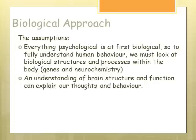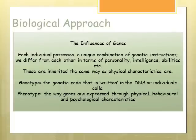The biological approach assumes that everything psychological firstly starts as biological. We look at structures and processes within the body — genes, neurochemistry, brain structure, and neurotransmitters — and by understanding these we can explain our thoughts and behaviours. Genes carry our genetic information and instructions, and just as our physical characteristics are inherited, our genes can influence our personality, intelligence, and certain abilities.